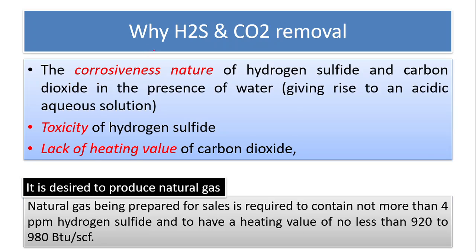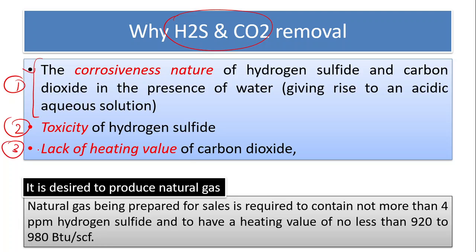Why is the removal of H2S and CO2 — the acid gases — necessary? The first reason is the corrosive nature of hydrogen sulfide and carbon dioxide in the presence of water, which is the main reason for acid gas removal. The second reason is the toxicity of hydrogen sulfide, and the third is the lack of heating value contributed by carbon dioxide.